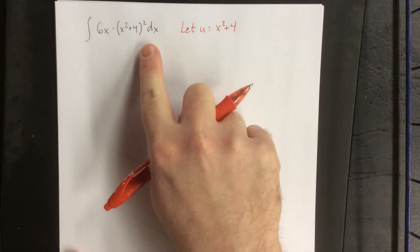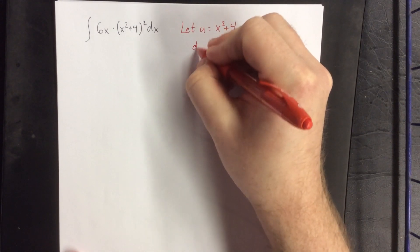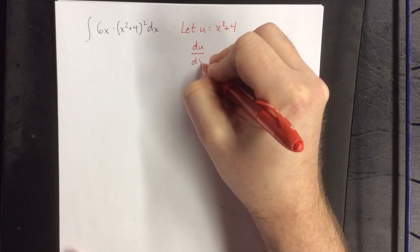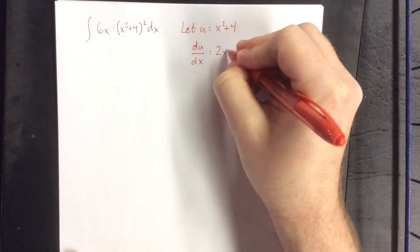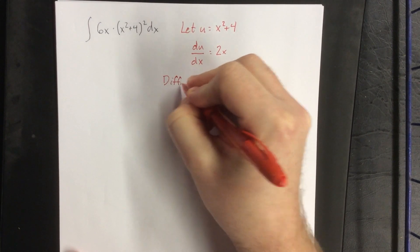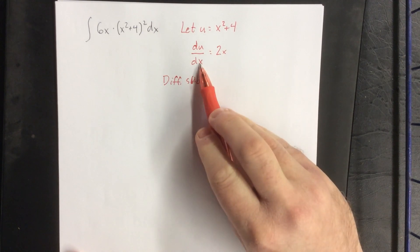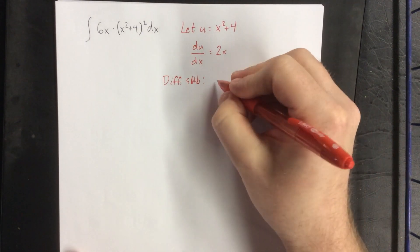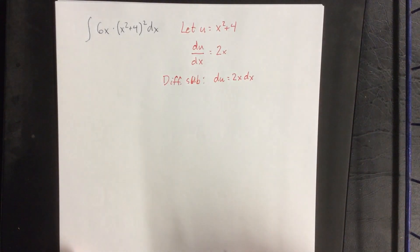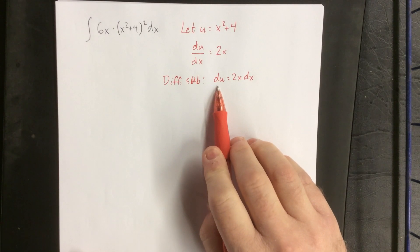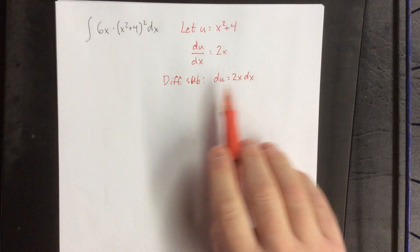Now if we're going to make the substitution, the goal is to turn this integral into an integral that contains only u's. That will also require a differential substitution. The way that we create a differential substitution is we take a derivative: du over dx equals 2x. The differential substitution is then created by multiplying both sides by dx, giving us du equals 2x dx.